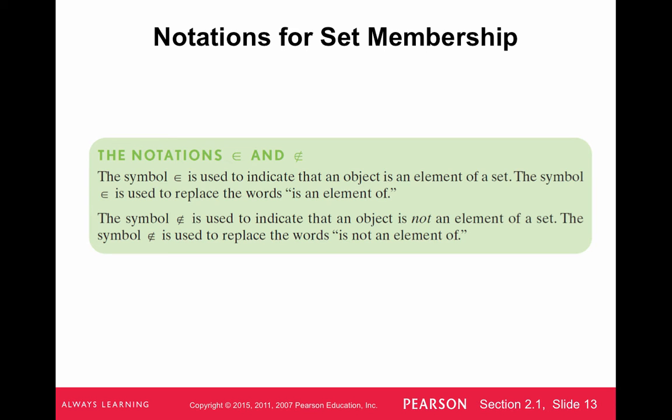Then you're also going to have to be comfortable with the notation of being an element of a set and not being an element of a set. So the symbol here is used to indicate that an object is an element of the set. The symbol E is used to replicate the words is an element of. And then we put a slash through it to indicate that the object is not an element of the set.